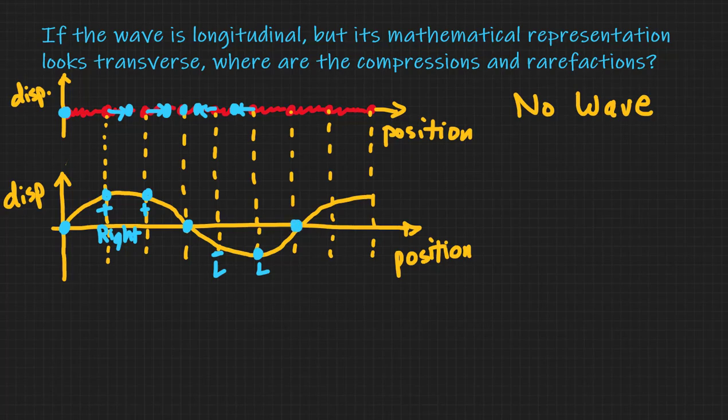This one, zero displacement. So this bead stays where it is. And then we're back to a positive displacement. This one gets displaced to the right. And this final one would get displaced to the right as well.